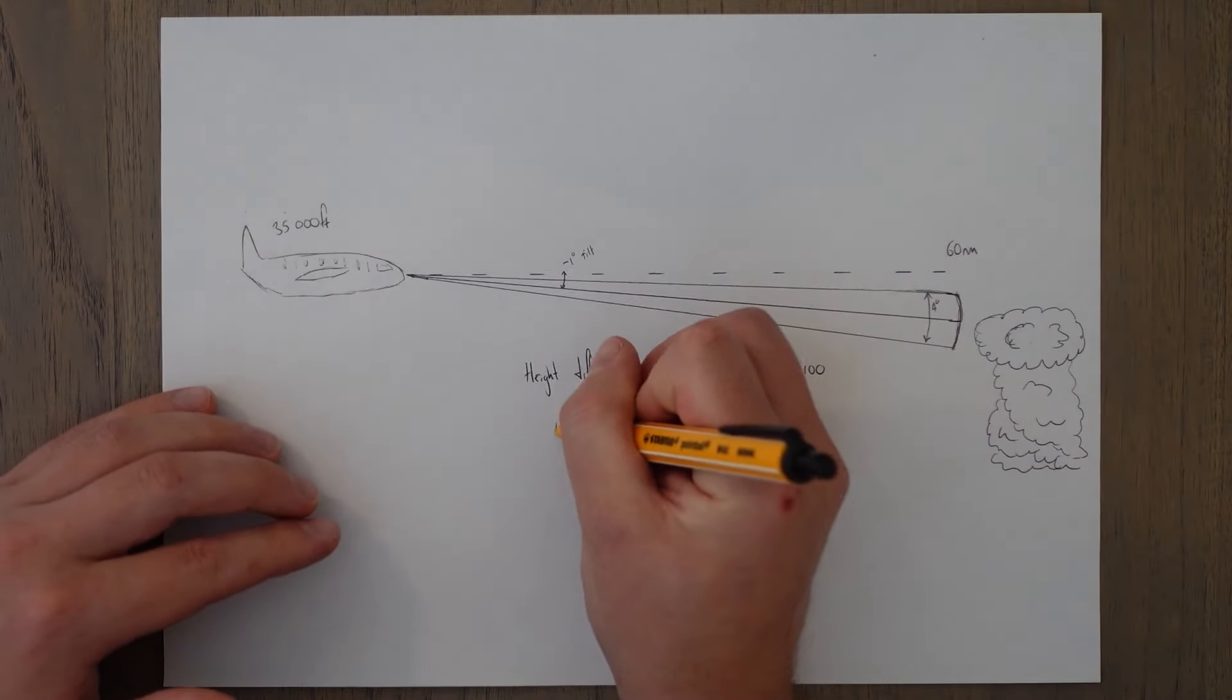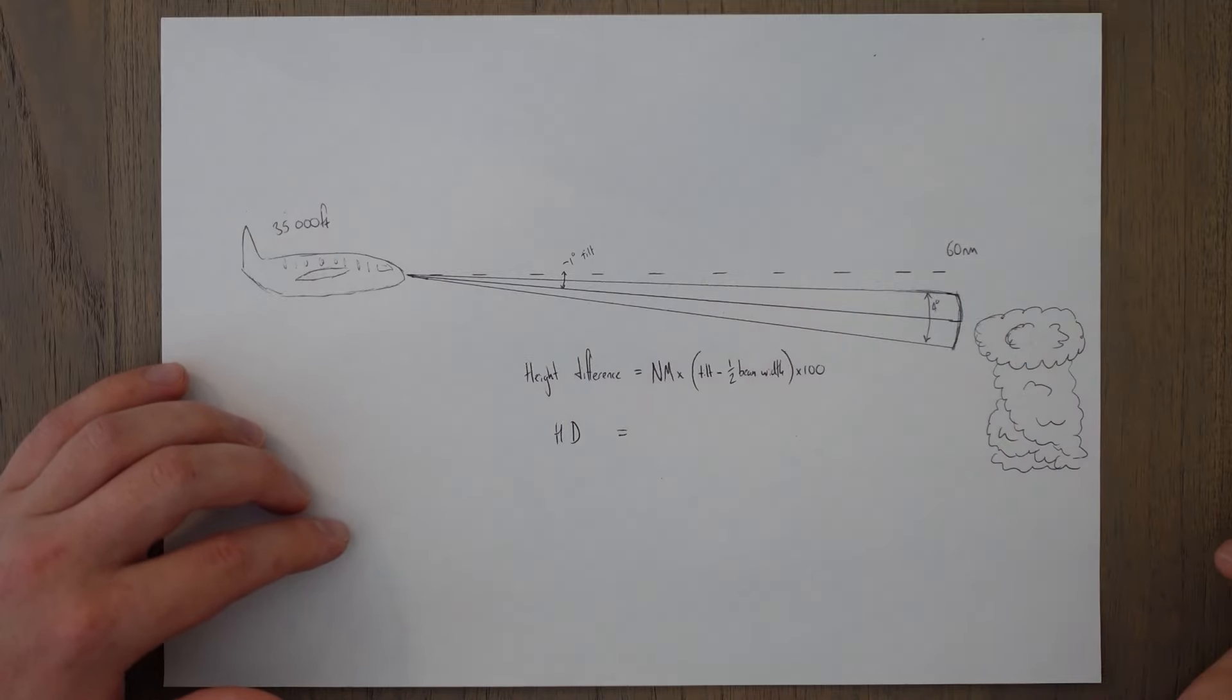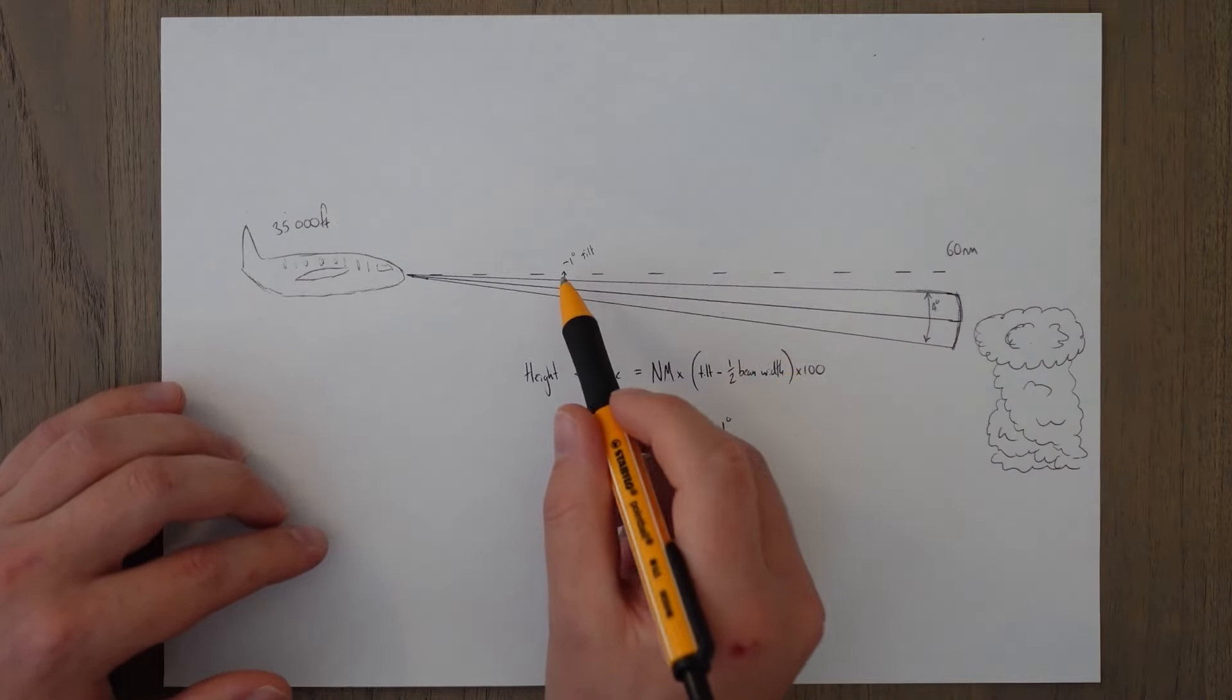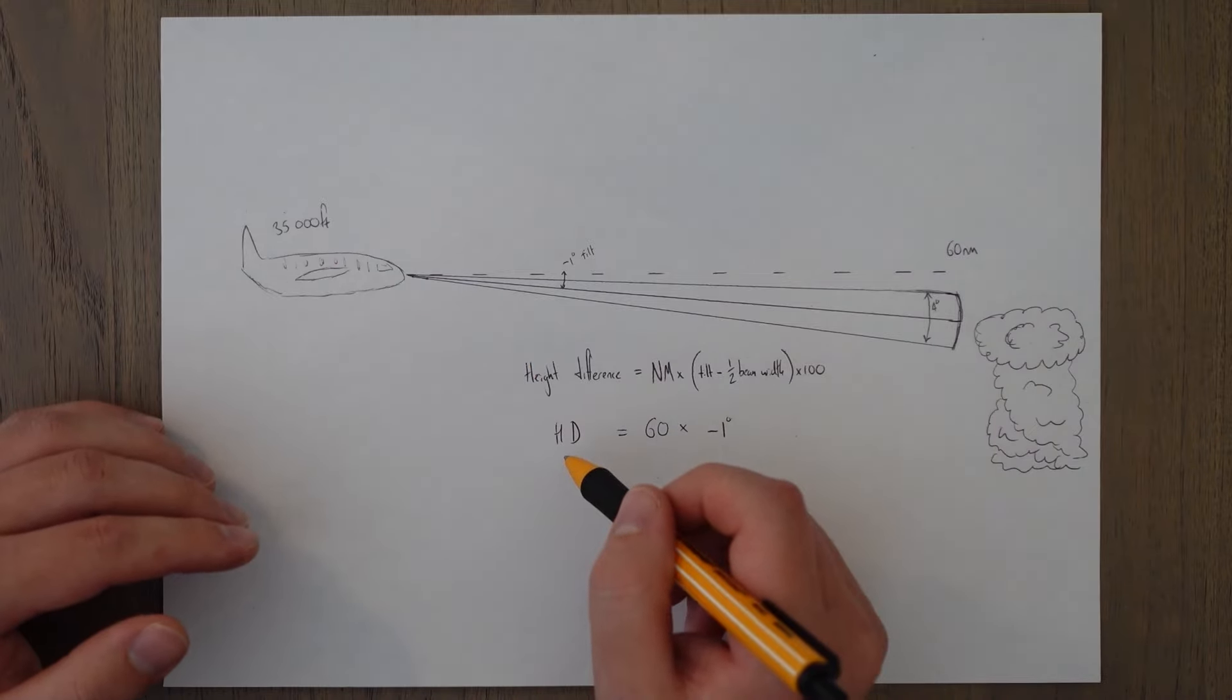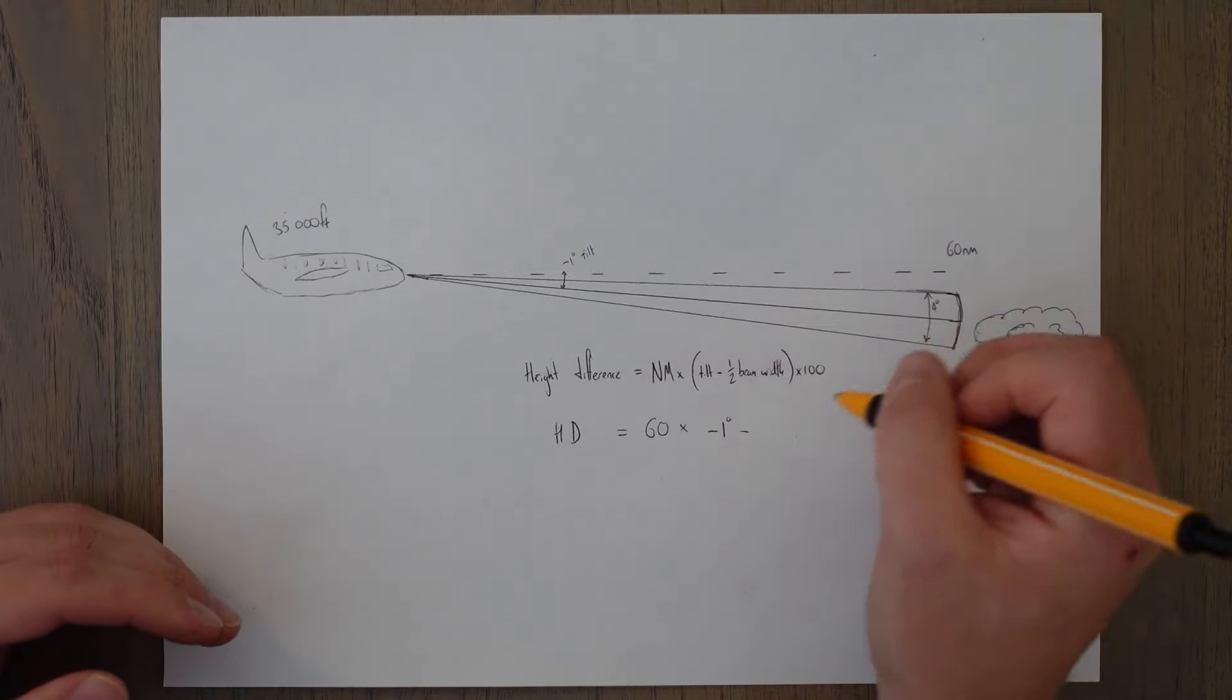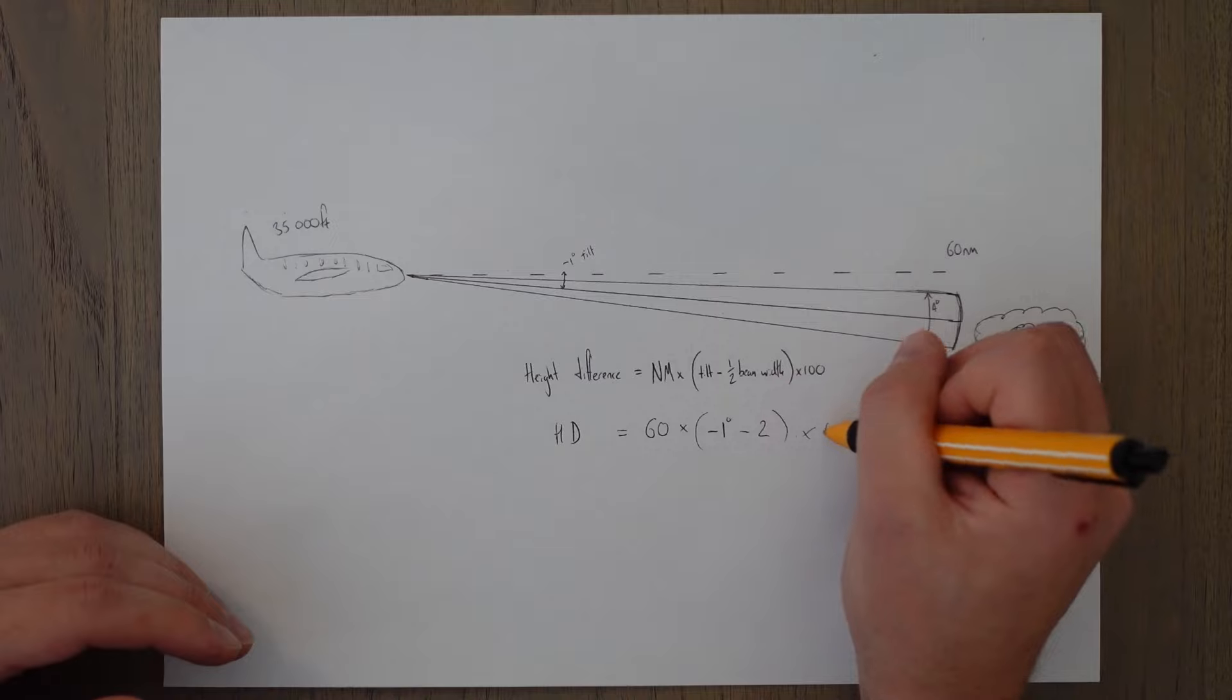So our height difference let's just call it h d for short is the nautical mile where we're getting returns that's 60 times the tilt is minus one, make sure and keep the minus symbol because that will give you a negative number meaning that it's below which from the diagram we can clearly see, minus half the beam width so it's going to be minus two and then we're going to times that as well by 100.